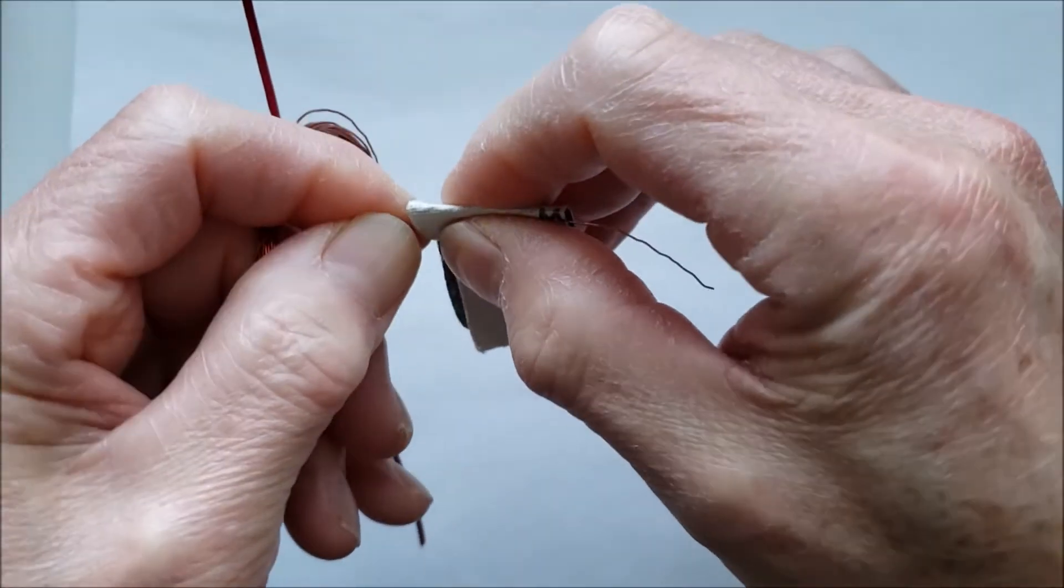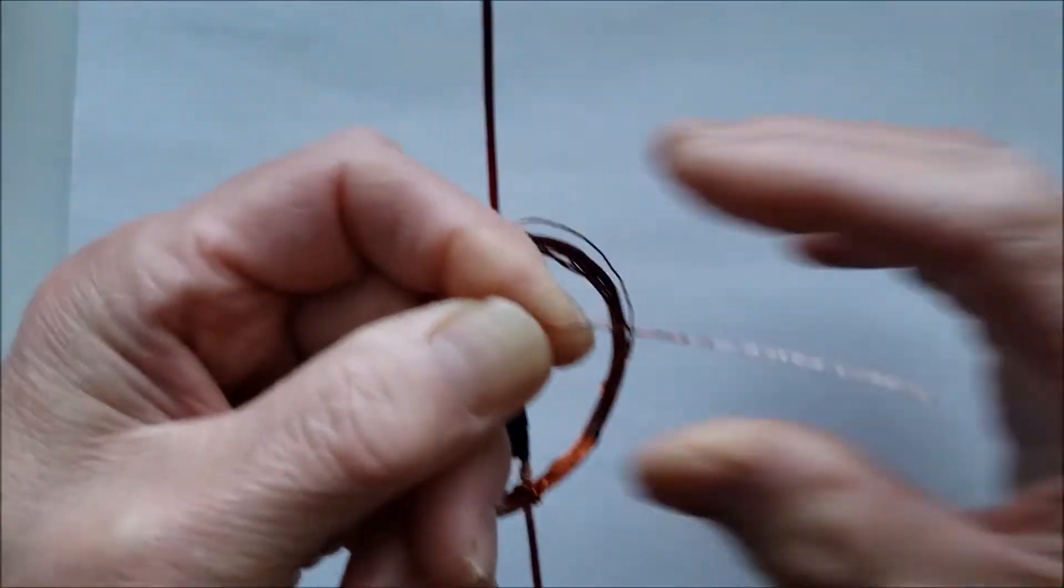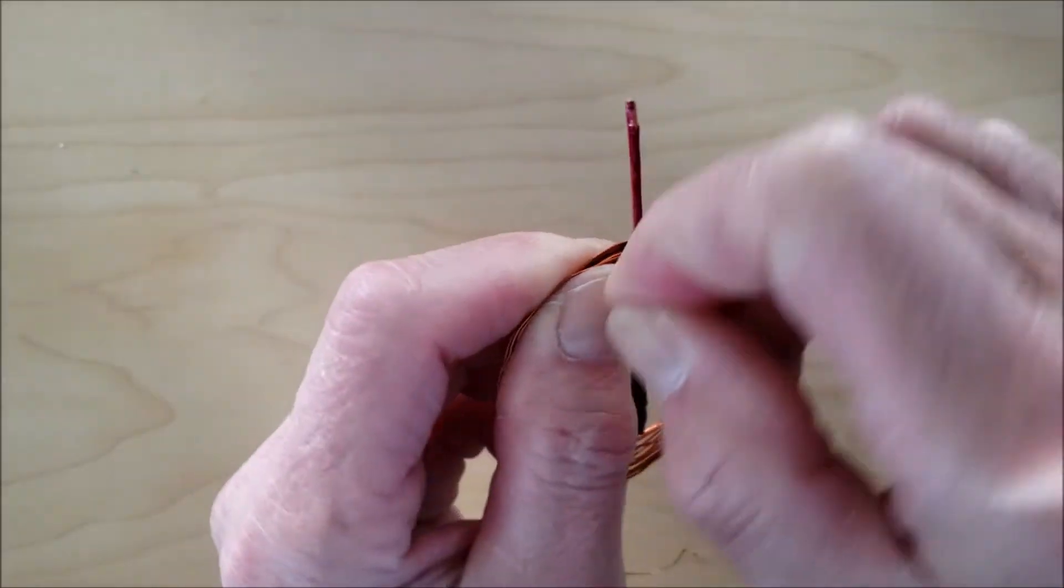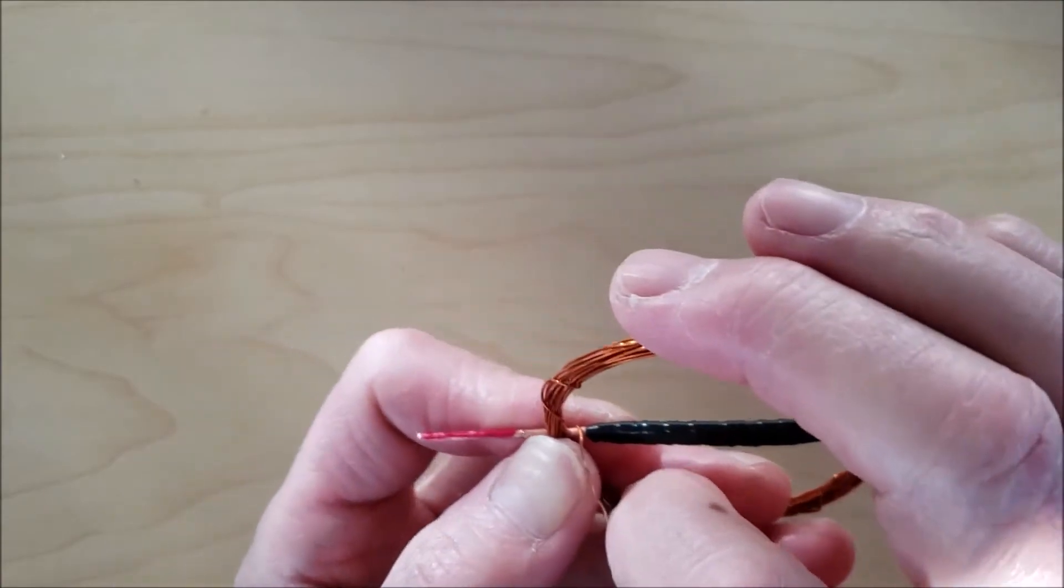Sand the varnish off the other end of the magnet wire and wrap the ends around the shaft. Make sure there is good electrical contact between the wire and the shaft.